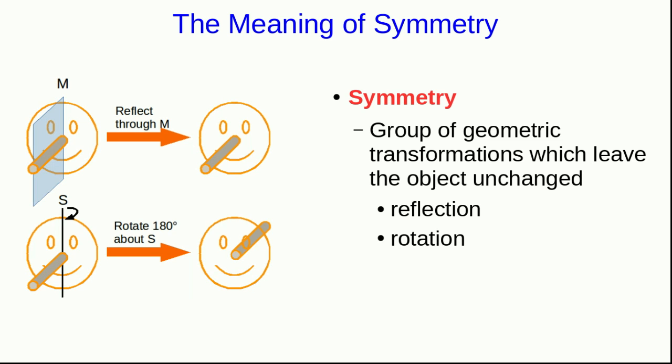However, if you make it a three-dimensional happy face, such as a Pinocchio face with a big long nose sticking out of the screen, now it's symmetric under this reflection, although we now have to talk about a mirror plane M, not a mirror line. However, it's not symmetric under this rotation about the axis S anymore, because it takes the nose, which was sticking out of the screen, and rotates it so that it's sticking into the screen.